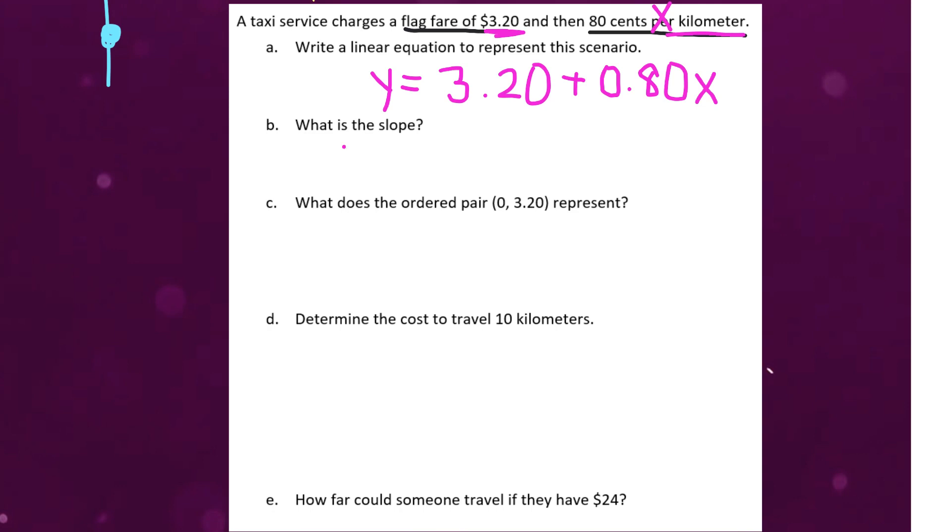So, part B here is asking, what's the slope? Well, remember, the slope is the coefficient. It's what we're multiplying, which number we're multiplying by x. So, in this case, our slope is 0.80.